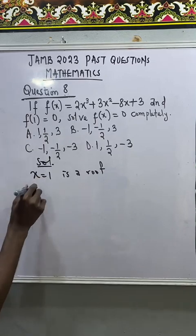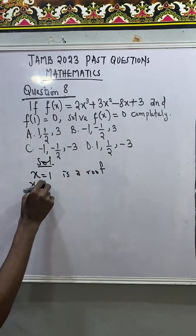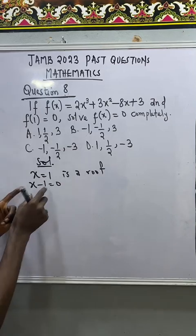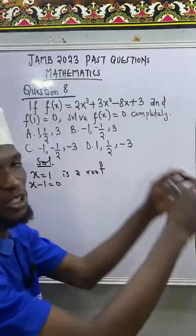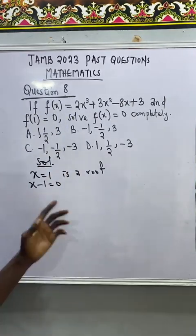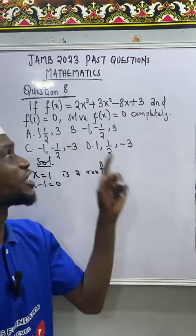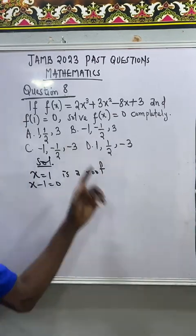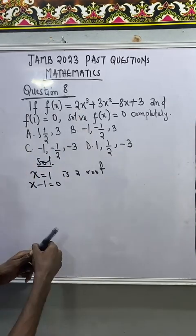Now, if I bring x to this side, if I bring the 1 to this side, that means I will have x minus 1 equal to 0. Now, I can use x minus 1 to divide this polynomial using long division. But I don't want to use long division here. There is another kind of division that we can use that will be faster, which is synthetic division.